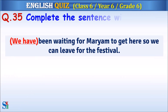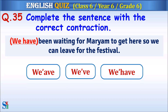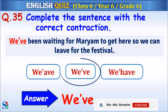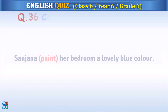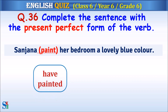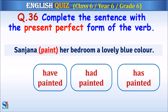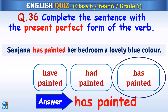Question 35: Complete the sentence with the correct contraction. The answer is 'we've.' Question 36: Complete the sentence with the present perfect form of the verb. The answer is 'has painted.'